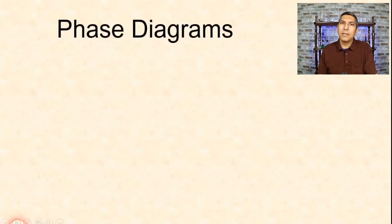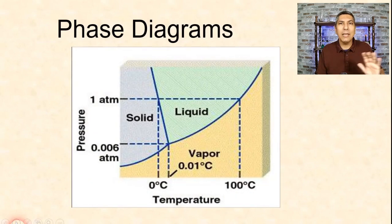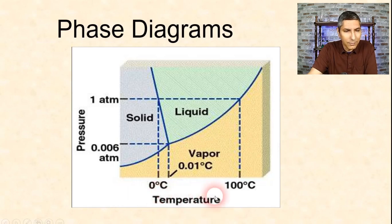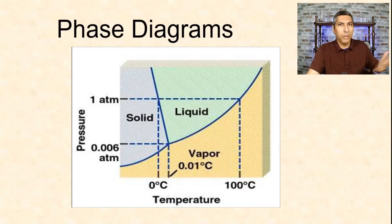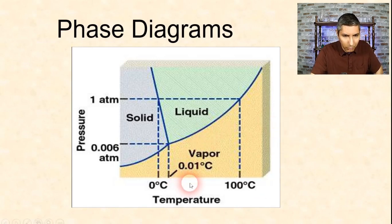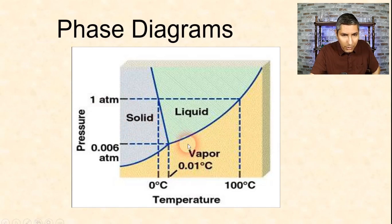Now let's put this together in something more graphical — a phase diagram. We can draw a phase diagram for any substance by plotting temperature on the x-axis and pressure on the y-axis, showing the regions at which the substance will be a solid, a liquid, or a vapor. In the case of water, room temperature is about 20°C and normal room pressure is about one atmosphere — bringing those together shows us that water is a liquid at room conditions, which is what we'd expect.